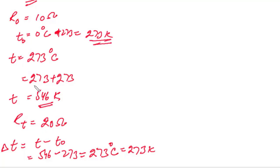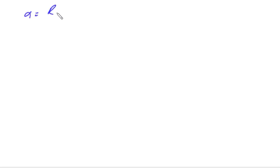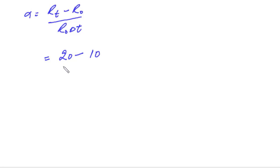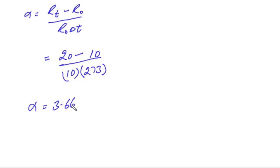We have to find the value of temperature coefficient alpha. The formula for alpha is: α = (R_T − R₀) / (R₀ × ΔT). R_T is 20, R₀ is 10, and ΔT is 273. Solving this gives α = 3.66 × 10⁻³ per kelvin.